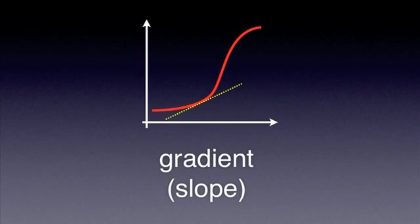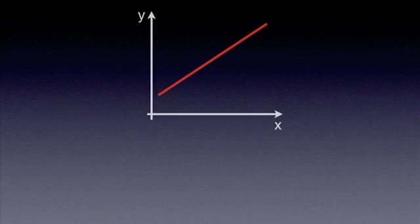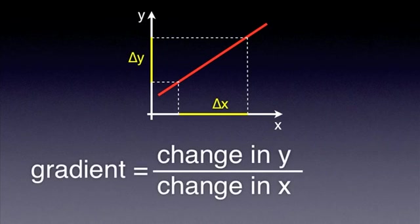Well, to be more precise, we should rather talk about the gradient of a graph for a given point, as the value of the gradient might change from one point to another. The gradient tells us how steep the graph is. If a y-versus-x graph is plotted, the gradient at a point is given by the change in y over the change in x for a section of the graph around that point.